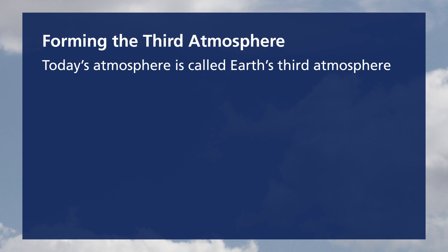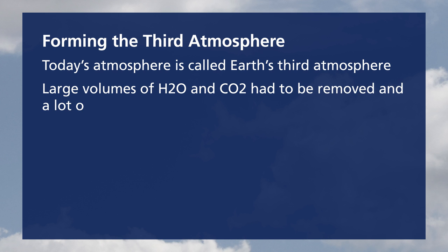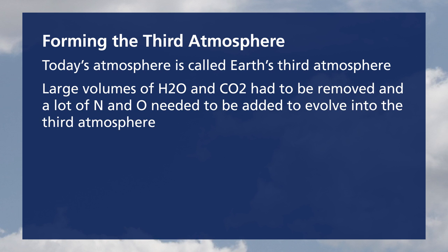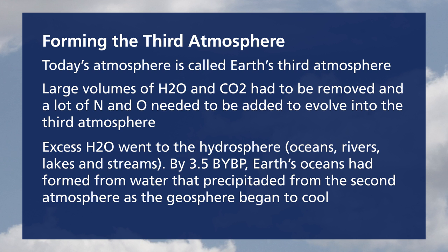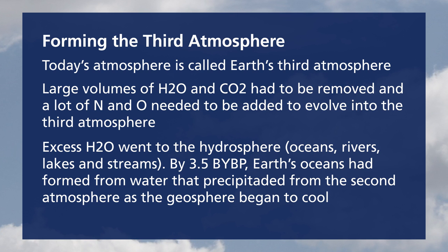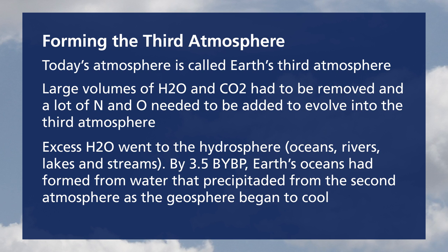Today's atmosphere is called Earth's third atmosphere. Big changes were needed to transform Earth's second atmosphere into the third: large volumes of water and CO2 had to be removed, and a lot of nitrogen and oxygen needed to be added. The excess H2O went into the hydrosphere — as the Earth cooled, the water condensed and became liquid. By approximately 3.5 billion years before present, Earth's oceans formed and the geosphere began to cool. Additionally, the biosphere began to develop approximately 2 billion years ago, and at this time micro-organisms transformed some of the gases — CO2 and methane — into oxygen.